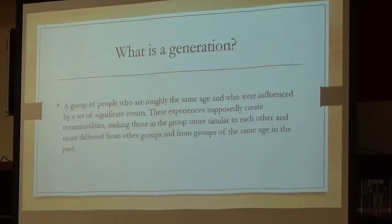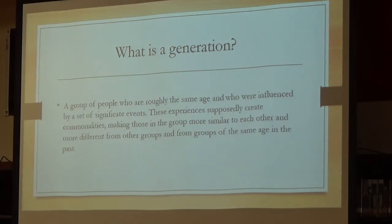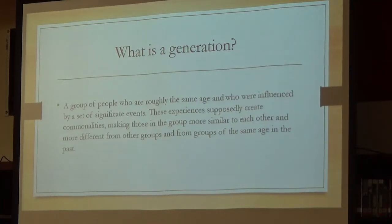So what's a generation? A generation is a group of people who are roughly the same age and who are influenced by a set of significant events. These experiences supposedly create commonalities, making those in a group more similar to each other and more different from other groups. Though there is a consensus on the general time period of generations, there is not an agreement on the exact year that each generation begins and ends.